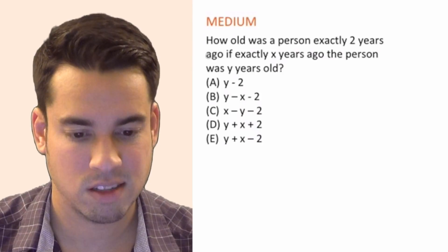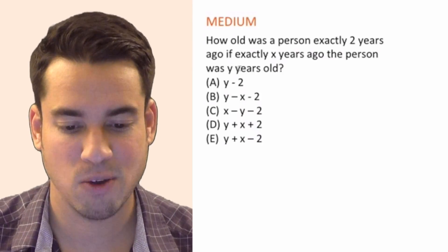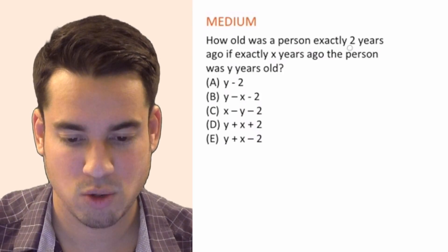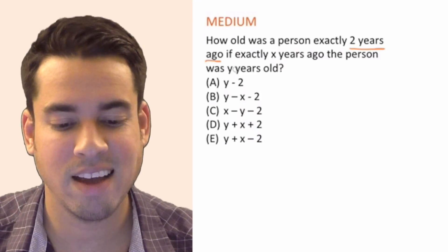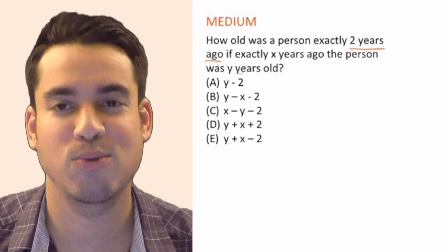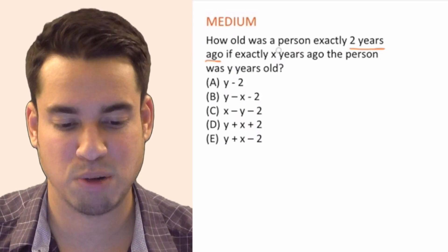It says how old was a person exactly two years ago if exactly X years ago the person was Y years old? So it's a little convoluted but let's break it down.